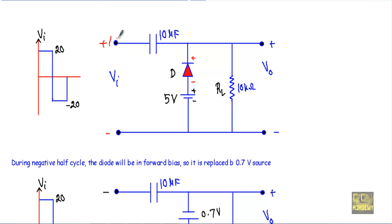Now consider the negative half cycle. During the negative half cycle, this terminal will be negative and this terminal will be positive. The positive terminal of the input voltage will be connected with the P side of the diode and the negative terminal will be connected with the N side of the diode. Since the positive terminal is connected with the P side and the negative terminal with the N side, the diode will be in forward bias. As this is a silicon diode, I will replace it with a 0.7V source.